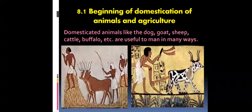First, they used to capture the wild animal. Then they used to tame the captured animal — taming means to train them, to domesticate them, to train them to live with human beings. The last step is obtaining useful materials like milk and eggs from them, and training them to work for humans as a beast of burden.